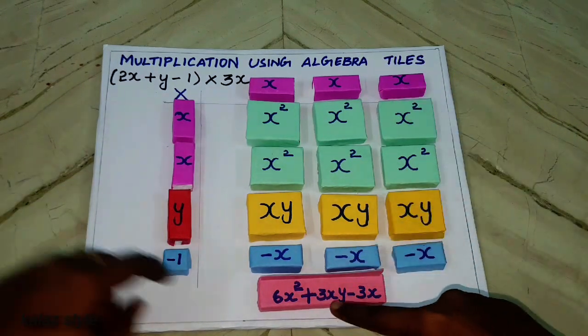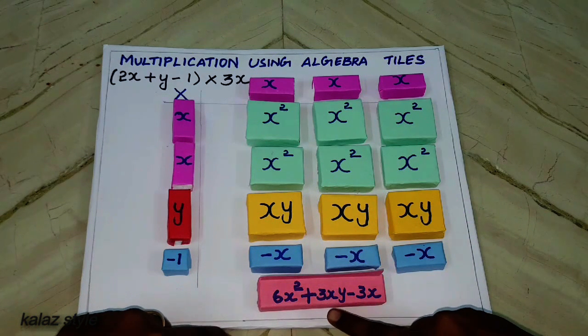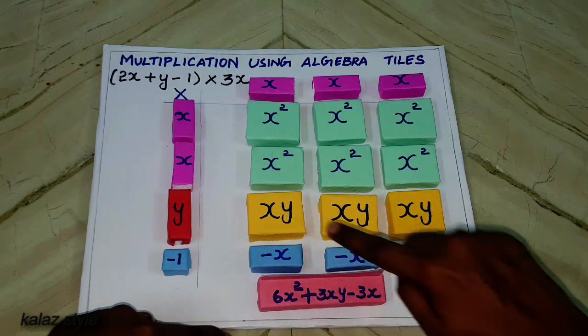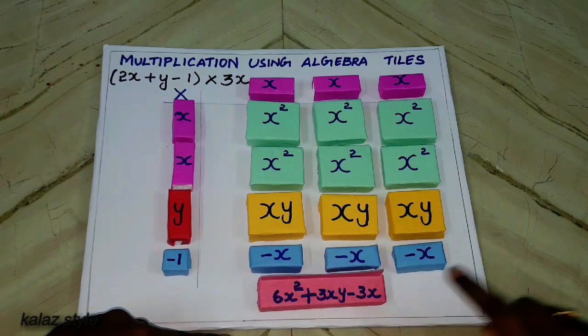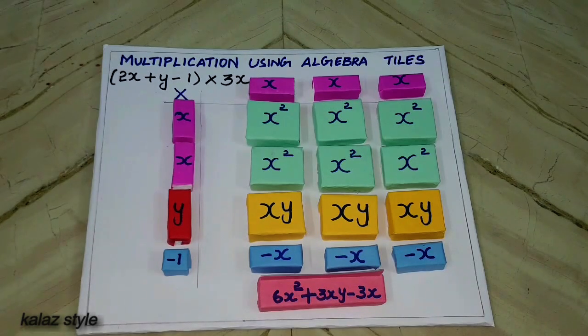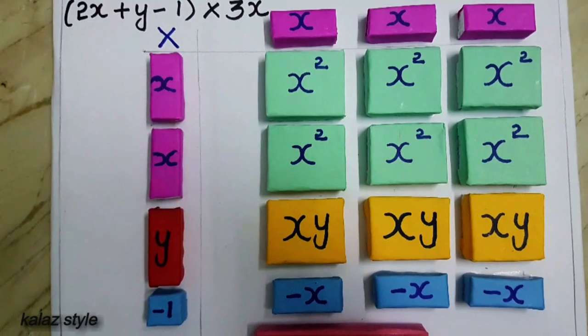When you add 6 tiles of x square, you will get 6x square. When you add 3 times of xy, you will get 3xy. And when you add minus x of 3 times, you will get minus 3x. So this is the procedure for multiplying using algebra tiles.